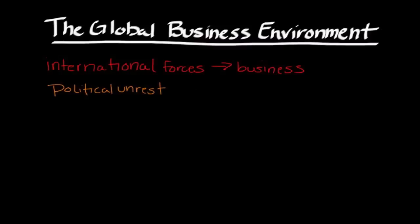Another thing to look for are natural disasters. We were exposed to a very significant natural disaster in 2011 with the earthquake and subsequent tsunami over in Japan. Obviously there was an extraordinary loss of life, which was just awful. But outside of that, from the business side, there was a very significant impact on supply networks here in the US.